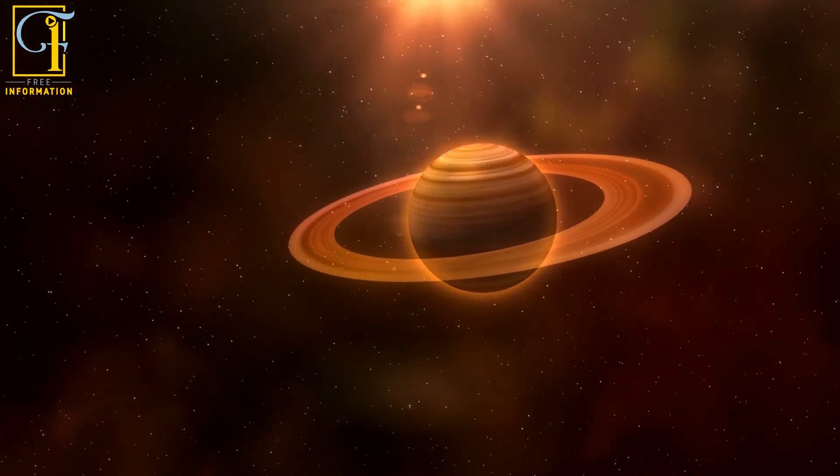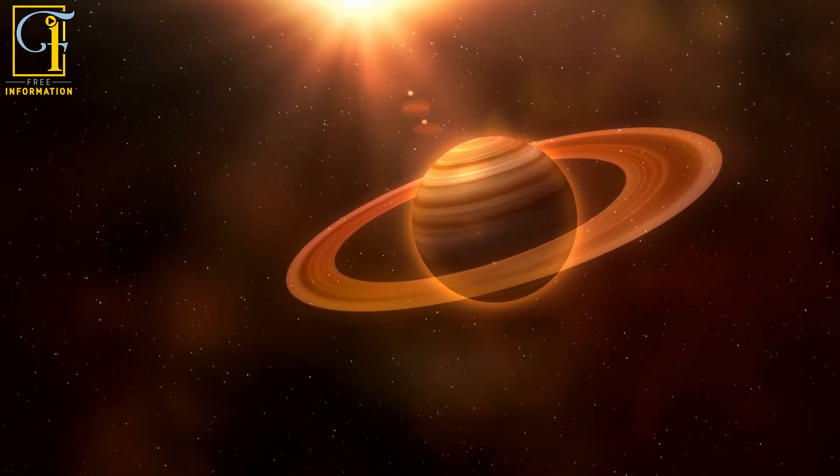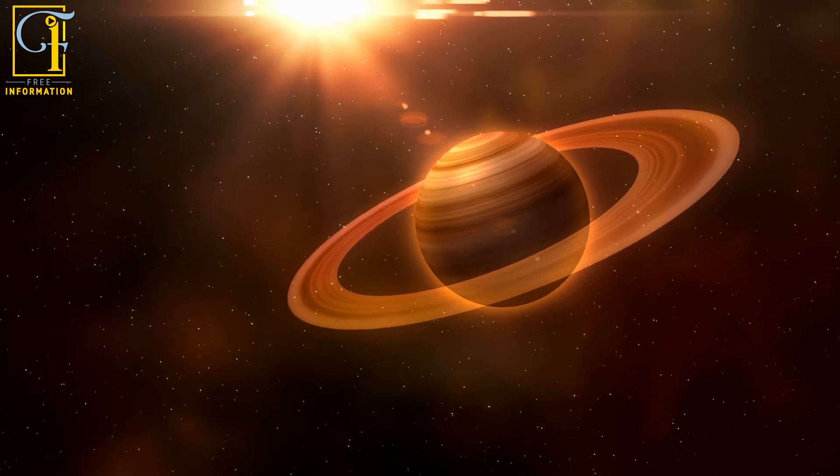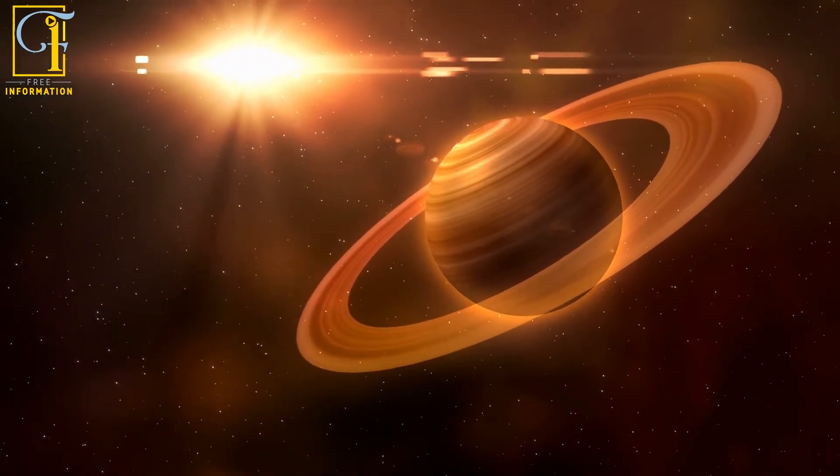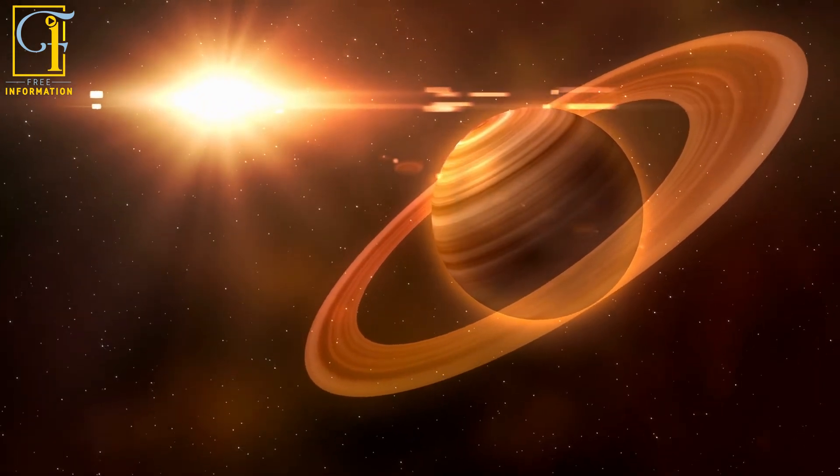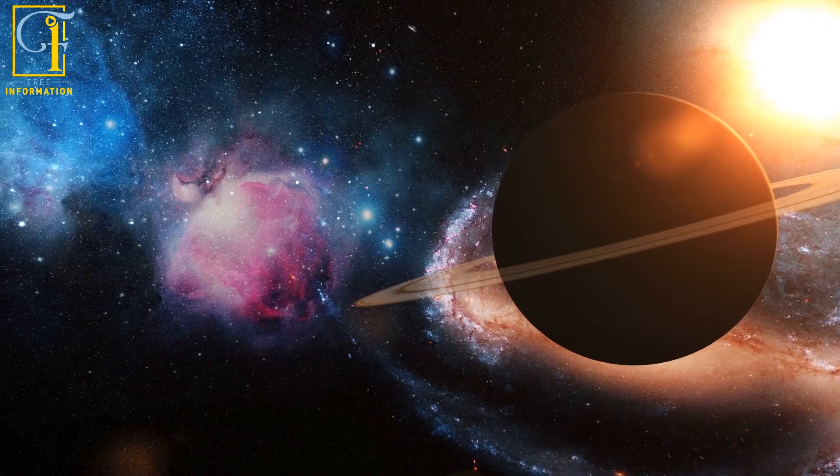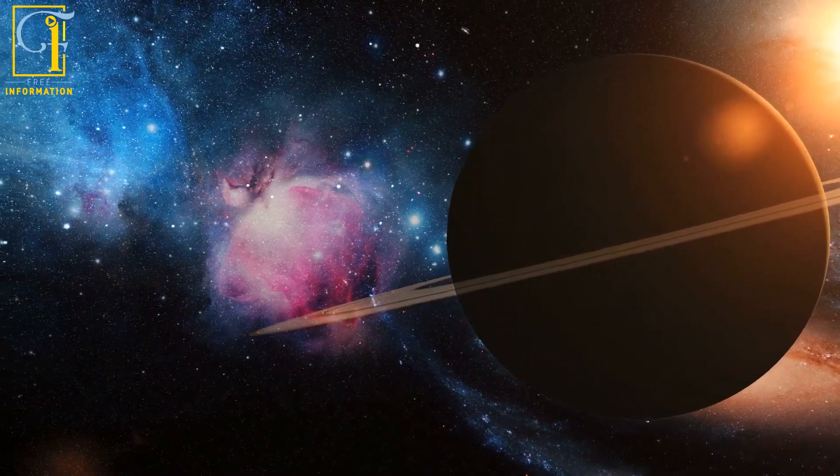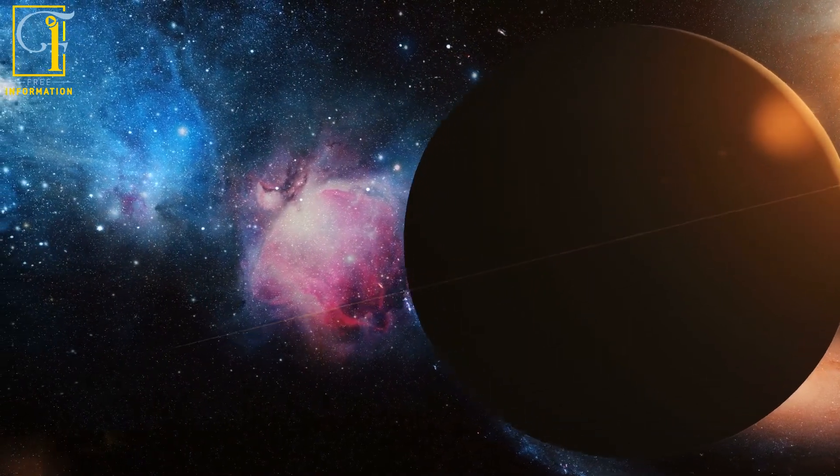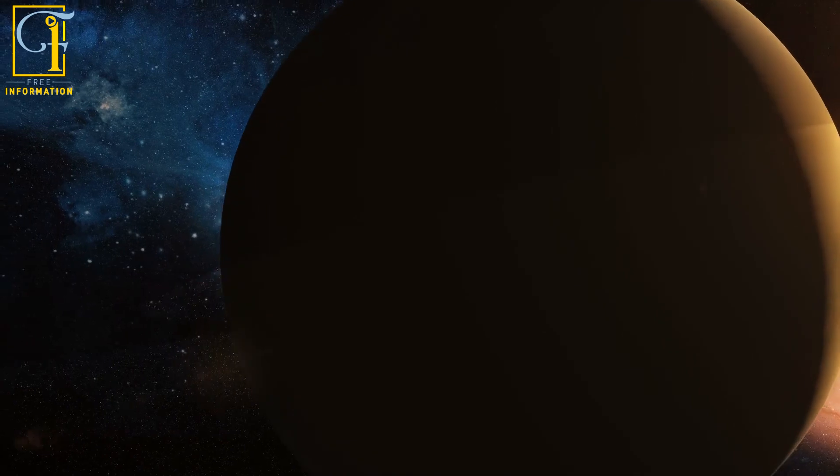In 1610, the astronomer Galileo Galilei was able to see Saturn for the first time with a telescope, but the ability of the telescope did not allow him to see much. He noticed the presence of a halo around the planet. About 50 years later, the Dutch astronomer Christian Huygens developed a theory that explains this aura as circular rings around the planet. In 1675, the Italian astronomer Giovanni Domenico Cassini confirmed this theory.